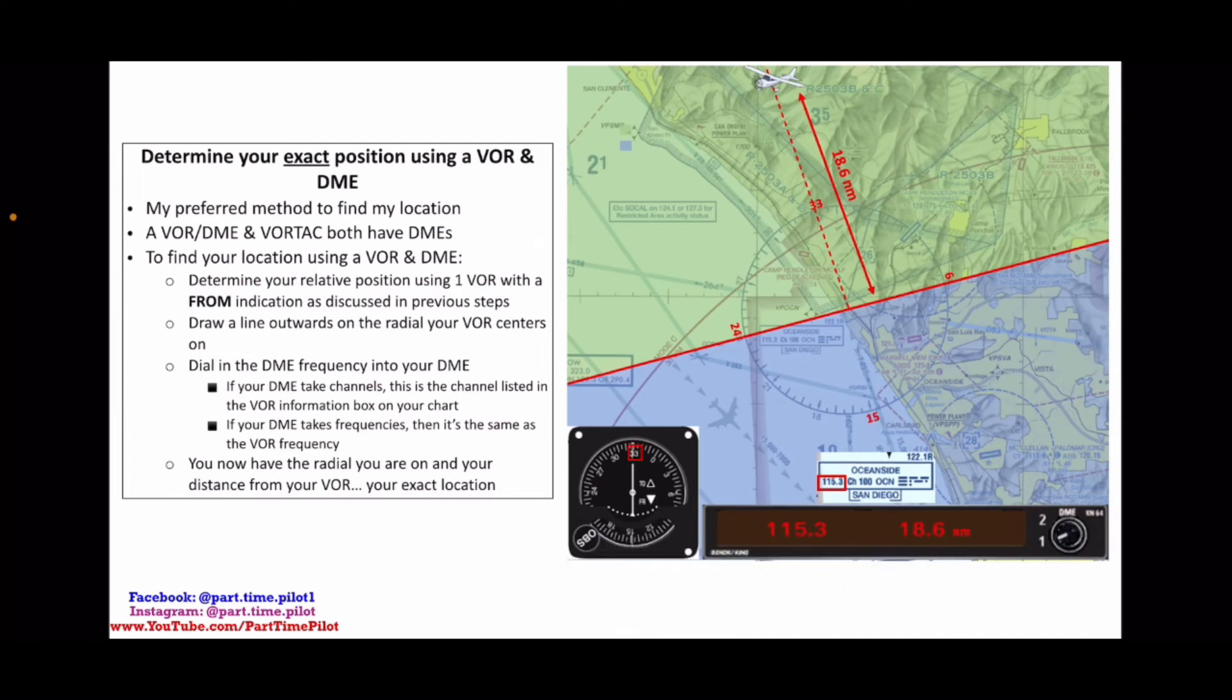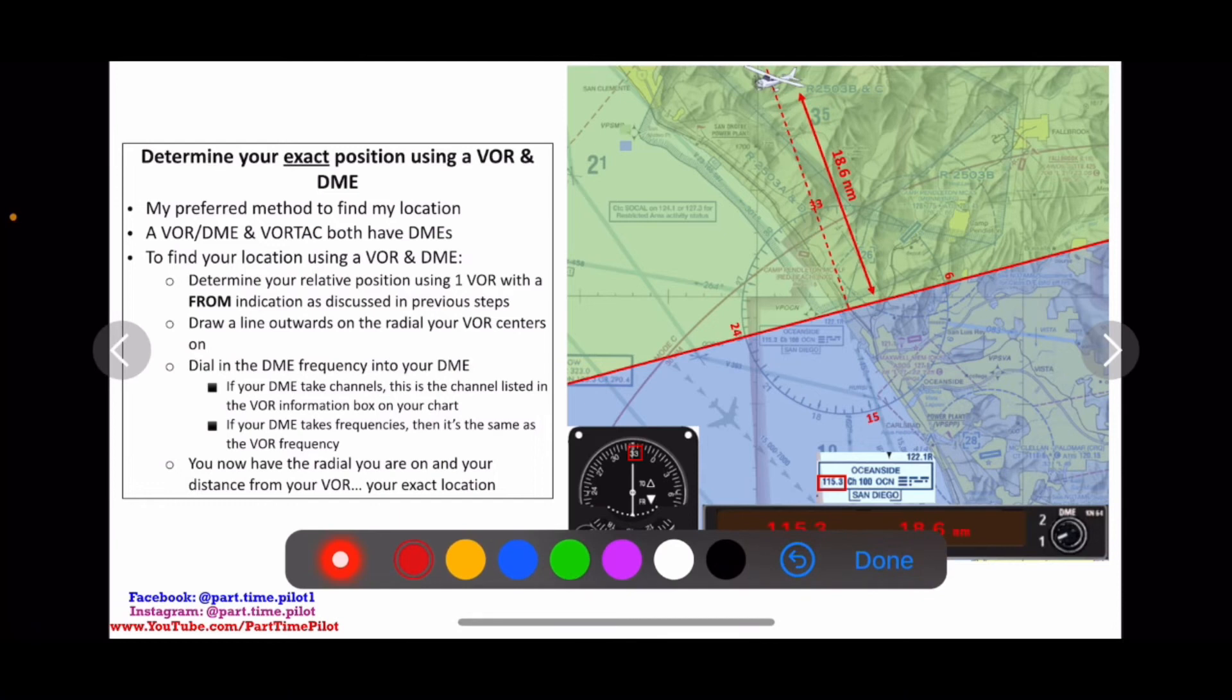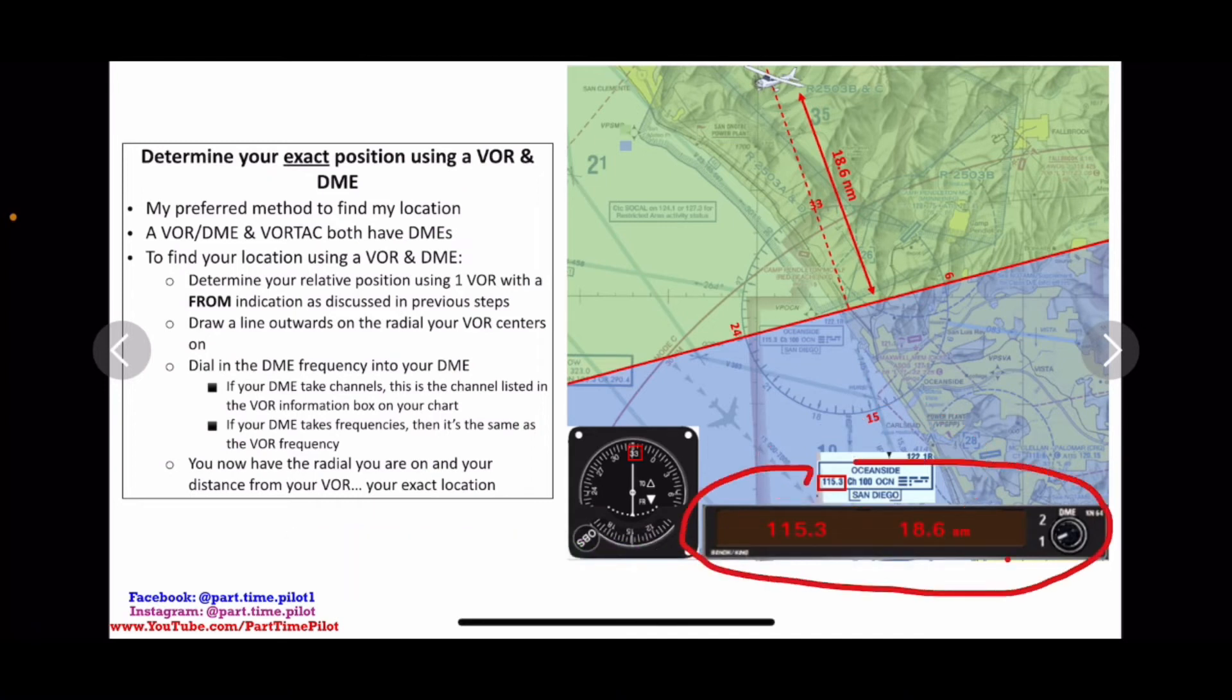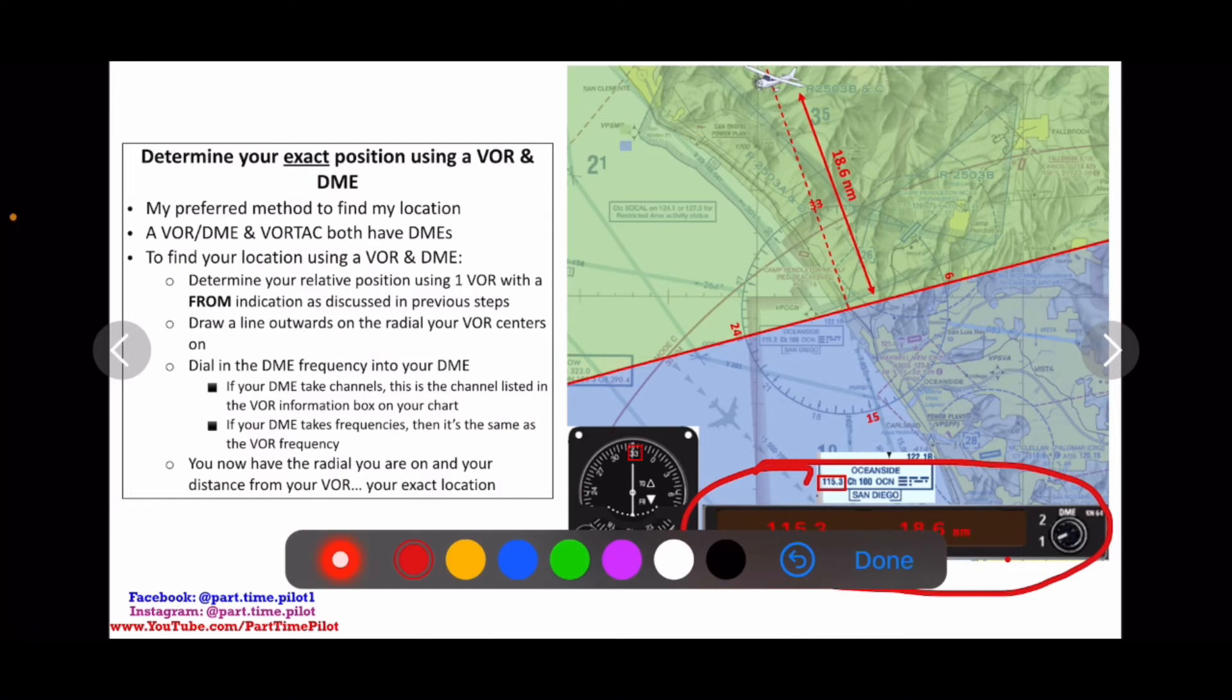What we're going to do is use the DME instrumentation in our aircraft and dial in the DME frequency. We're going to find that frequency - it's the same frequency as the VOR station listed in the comm box. And then this right here is going to be our DME.